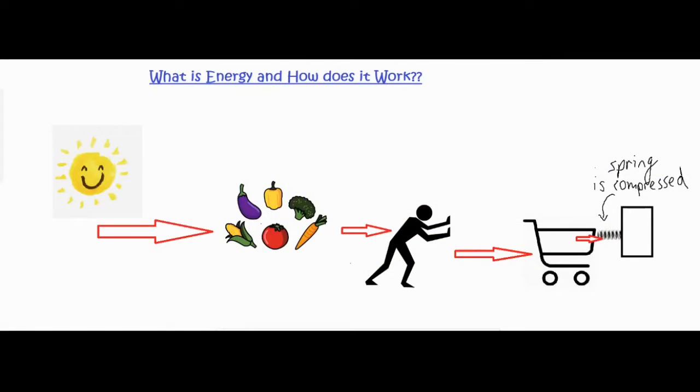In this video we're going to be talking about what is energy and how does it work. In front of you there's a series of events that lead to a spring being compressed. When a spring is compressed from its equilibrium position it has a type of energy called elastic potential energy. It has energy stored up in it due to its position because it is compressed and pushed in from its resting position. But what is energy and how does it work?